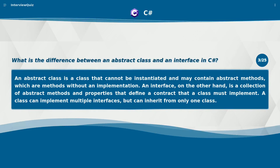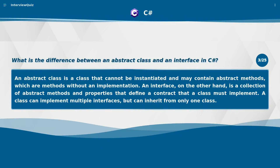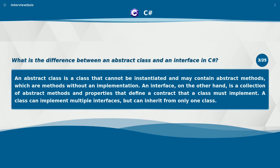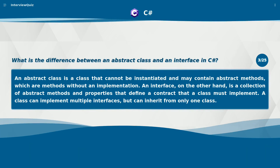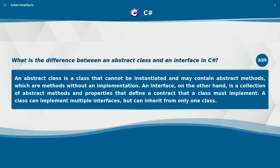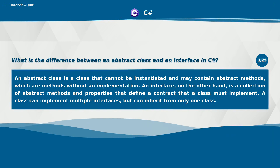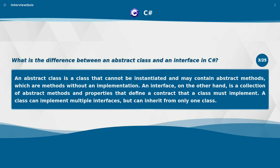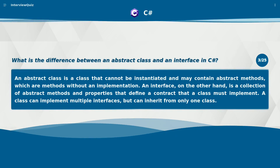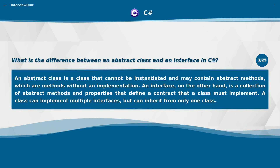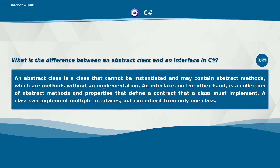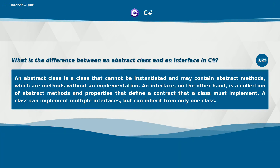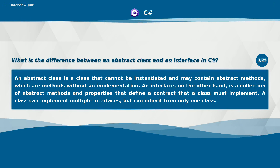What is the difference between an abstract class and an interface in C#? An abstract class is a class that cannot be instantiated and may contain abstract methods, which are methods without an implementation. An interface, on the other hand, is a collection of abstract methods and properties that define a contract that a class must implement. A class can implement multiple interfaces, but can inherit from only one class.